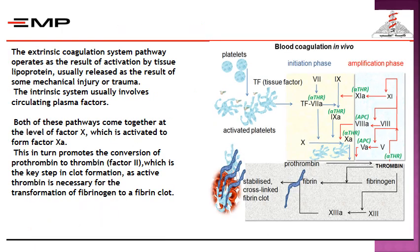In this slide we see both the intrinsic and extrinsic pathways, which represent the coagulation cascades and how they work together to form a solid thrombus in case of injury. The extrinsic pathway operates as a result of activation of tissue lipoprotein, usually released due to mechanical injury or trauma. The intrinsic system involves circulating plasma factors. Both pathways converge at factor 10, activating the common pathway, which promotes conversion of prothrombin to thrombin — the key step in clot formation — as active thrombin transforms fibrinogen into a fibrin clot.